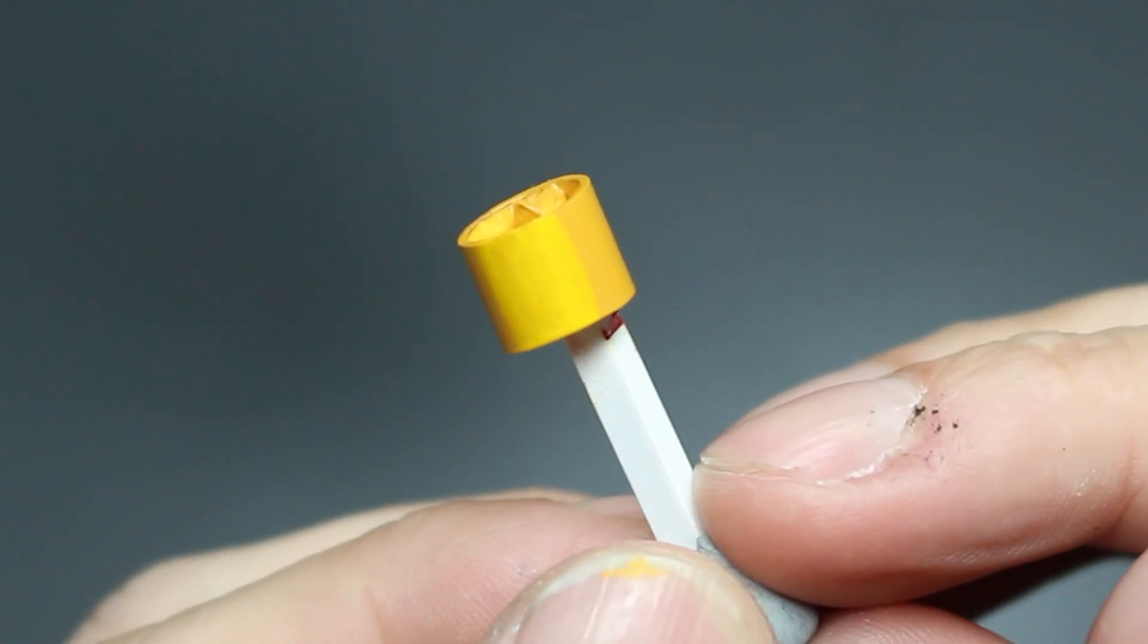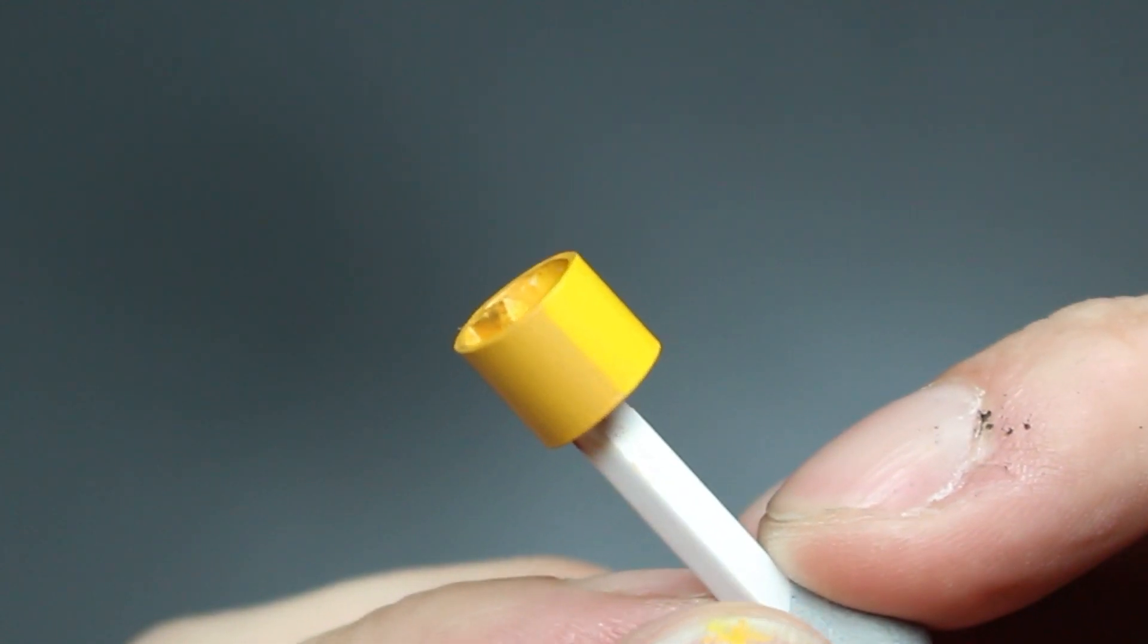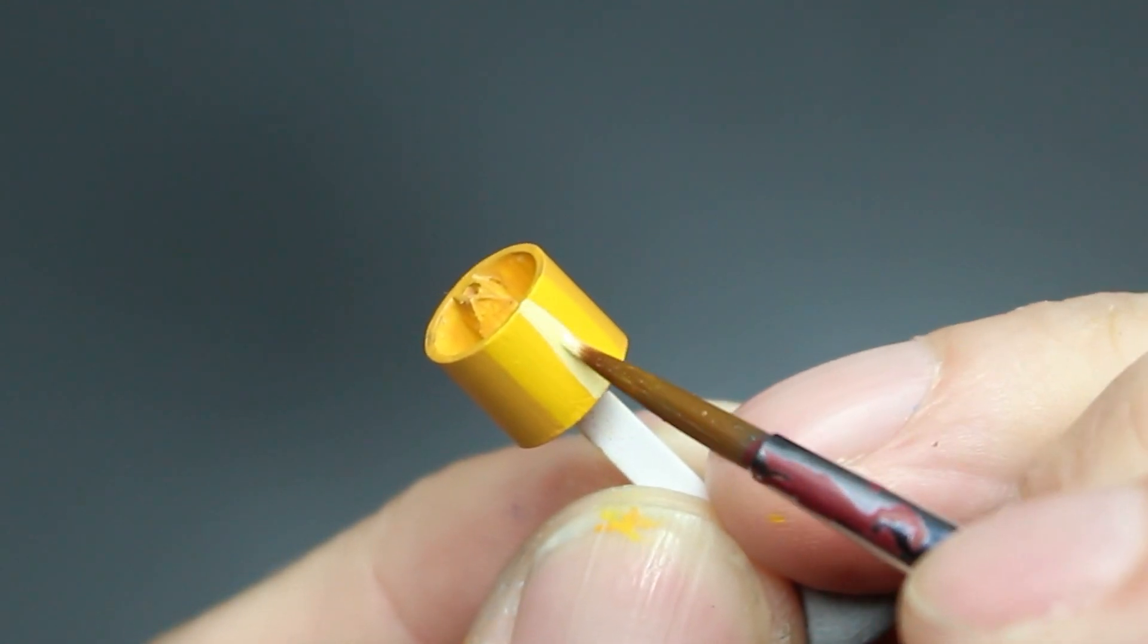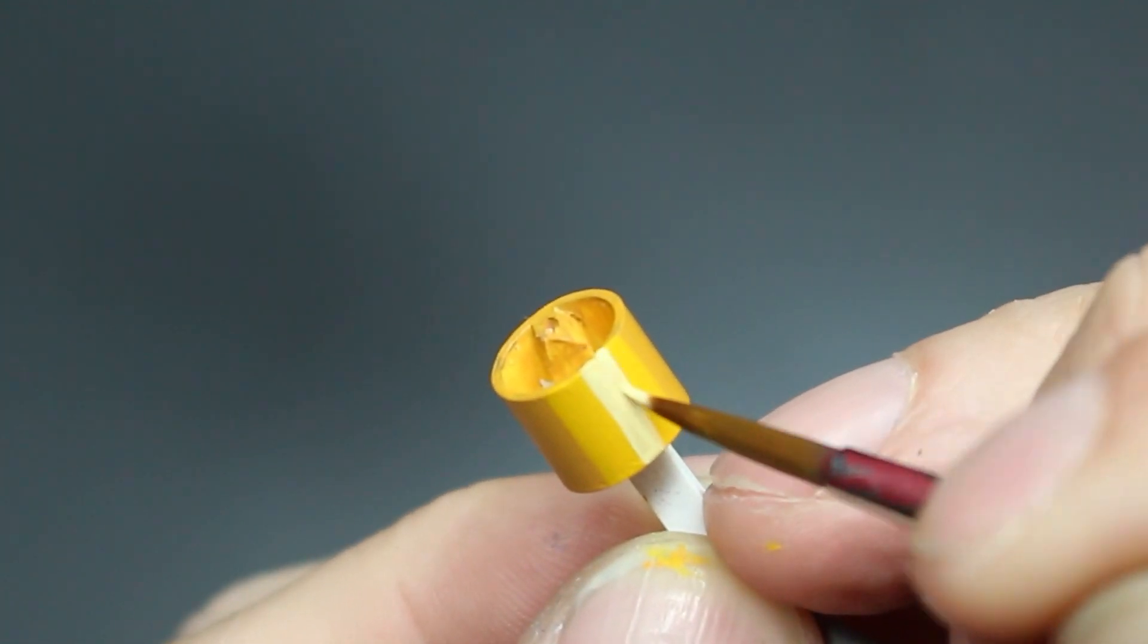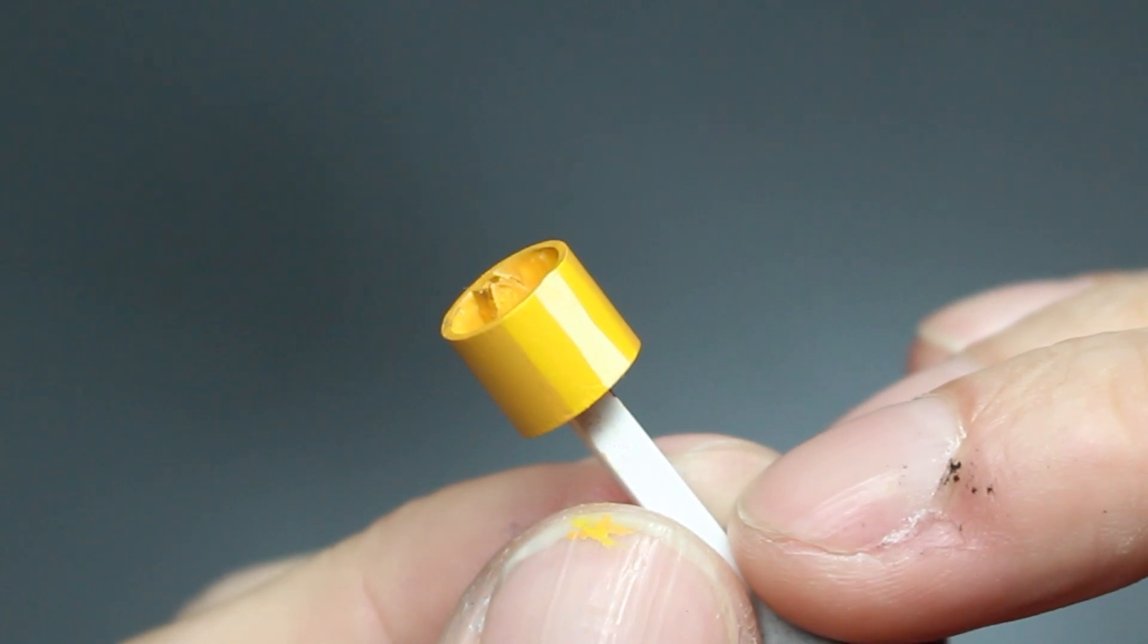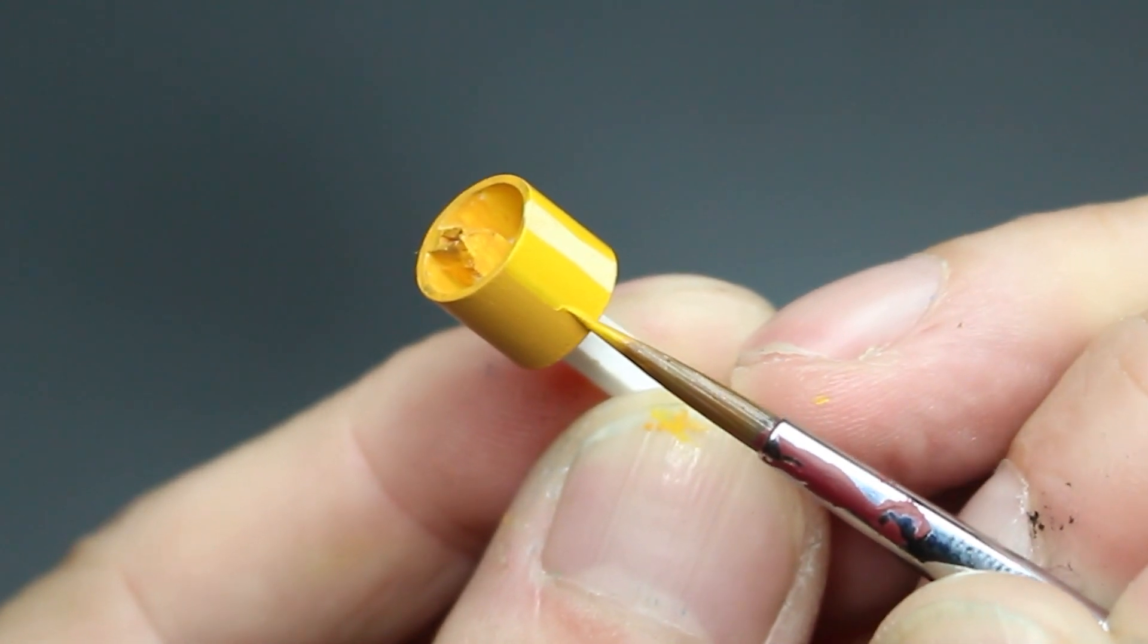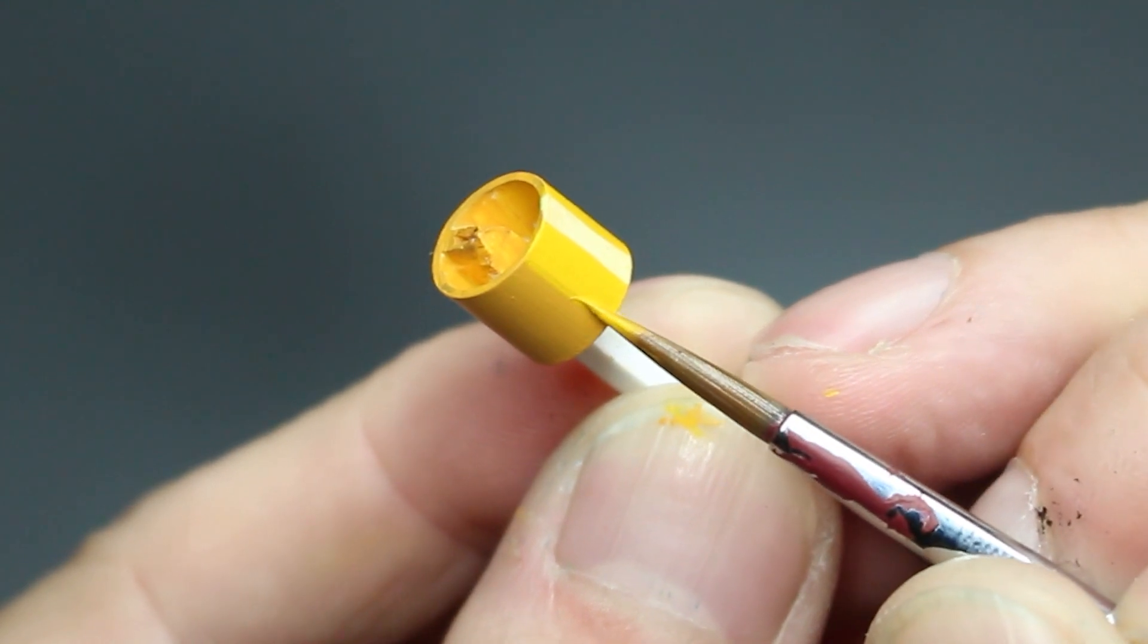About two or three layers if you get it nice and thin. Then you add in your highlight, which in this case is Dawn Yellow. So this is basic layering: dark, mid, and then highlight, which is your lightest tone. Now what we want to do is obviously make that transition a lot smoother.